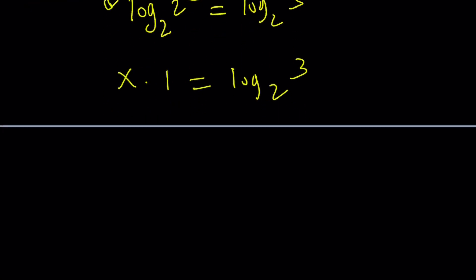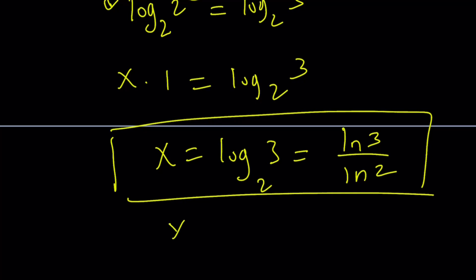But obviously, by using change of base, we can also write it as ln 3 over ln 2. Therefore, along with the first solution that we found, which is x equals 0, we'll be done with our solutions.